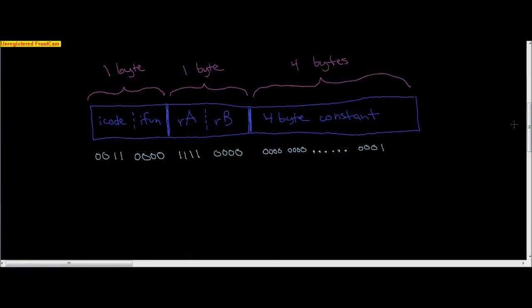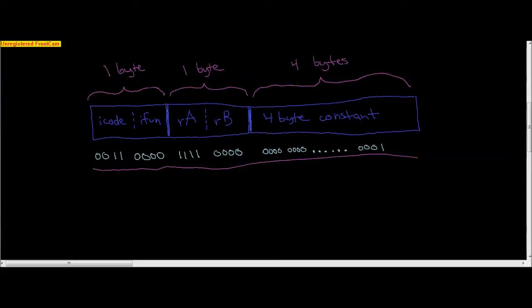So instructions are made up of ones and zeros. The idea is we're going to say that each chunk of ones and zeros means something in terms of an instruction, a register, or a number. That's how we're going to map things. In the book you'll see iCode and iFun. This is one byte — iCode gets four bits and iFun gets four bits.